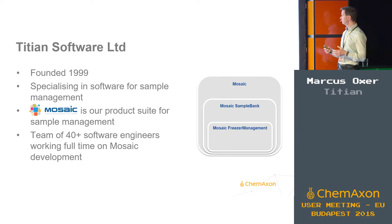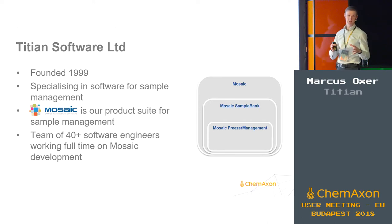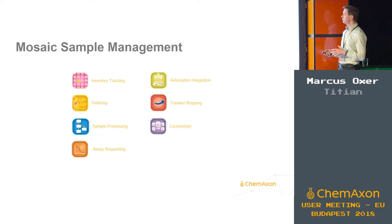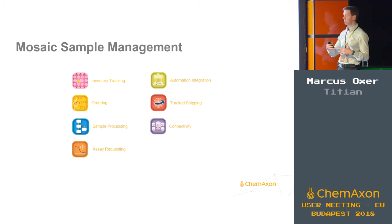The Mosaic Sample Bank product adds, on top of that functionality, the ability for scientists to request items from inventory or request assay plates, and brings in further integration with automation such as liquid handling. The full Mosaic product allows customers to specify exactly how they want Mosaic to work in their organization — highly configured to meet customer-specific requirements. Mosaic covers inventory tracking, automation integration with liquid handlers through either file-based mechanisms or tight integration where Mosaic instructs the liquid handler what transfers to make, and responses are reconciled in the database for a full audit trail.